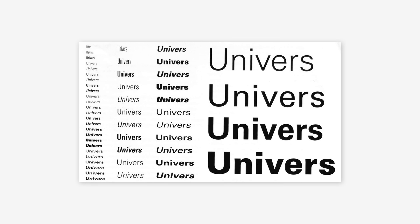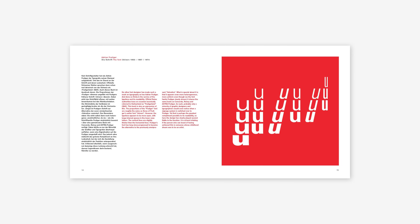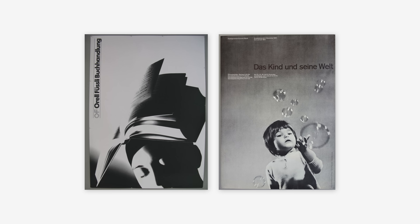Univers was one of the first typefaces to be designed as a cohesive family, with multiple weights and styles that could be used interchangeably. This versatility and consistency makes Univers a valuable tool for creating coherent and flexible typographic systems.